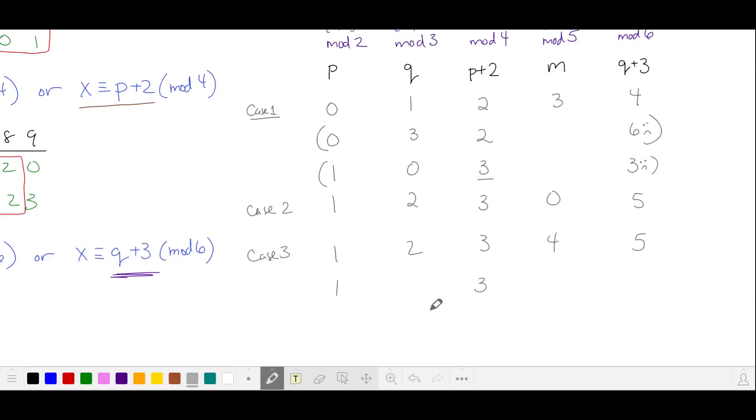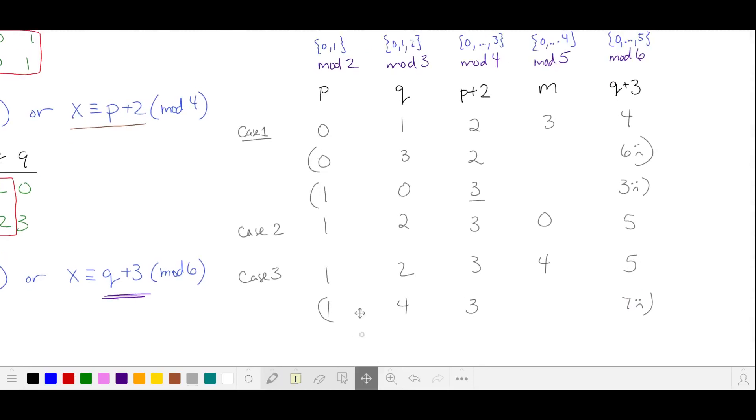Continuing on with p equals one, the next valid q is four. This becomes seven, which is not valid. And p can only be a mod two residual, which means it can only be zero and one. So we've exhausted all three cases.